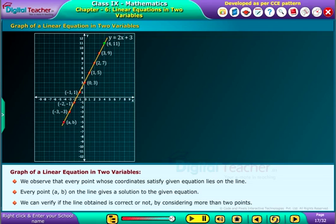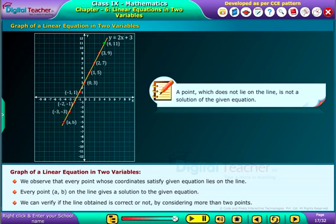We can verify if the line obtained is correct or not by considering more than two points. Make a note that a point which does not lie on the line is not a solution of the given equation.